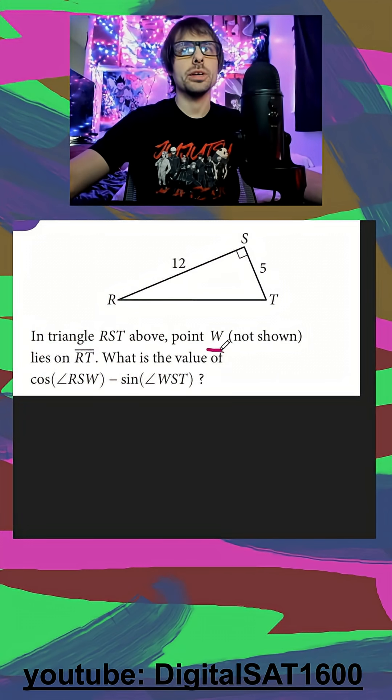In triangle RST, point W lies on the line RT. So I'll put a W here.